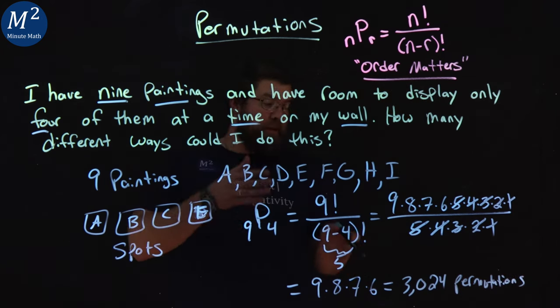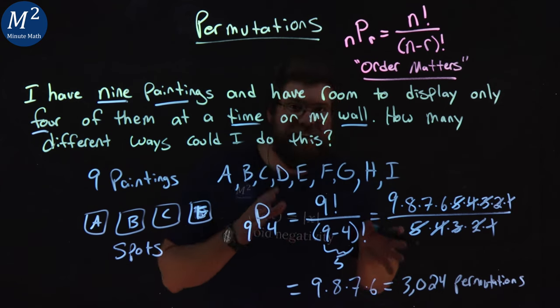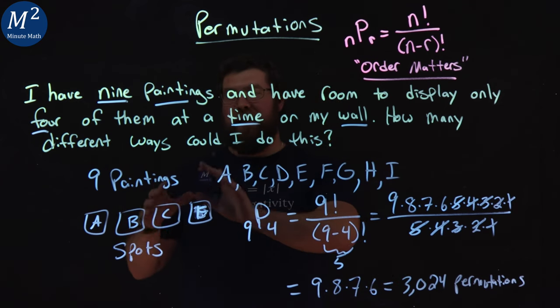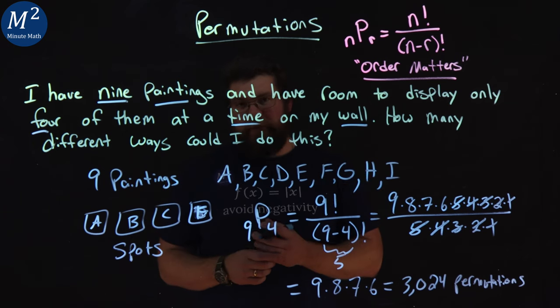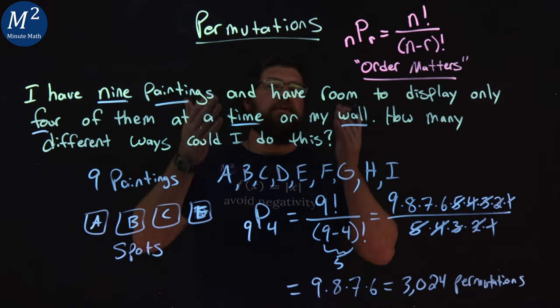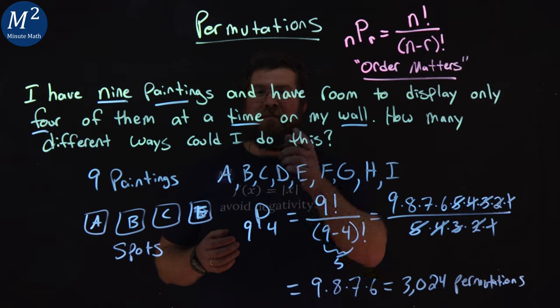So there are 3,024 different ways that we can take our 9 paintings and move them to 4 different spots on our walls. I hope you learned something here about permutations. And as always, thanks for watching.